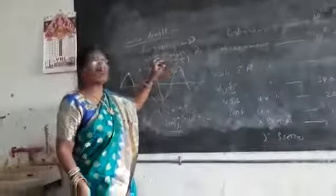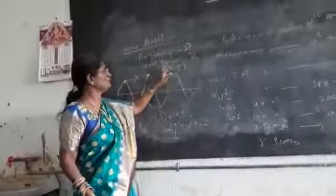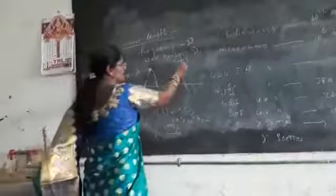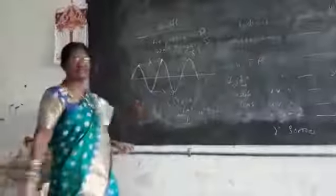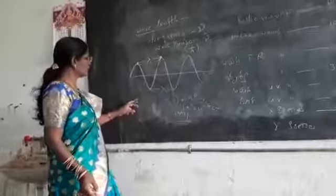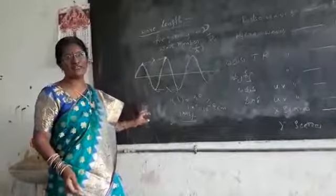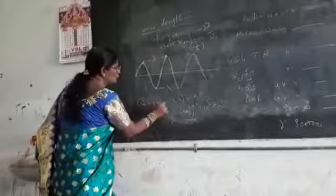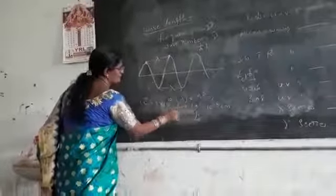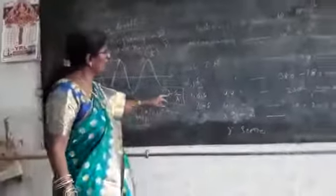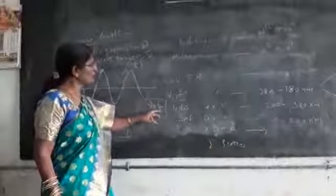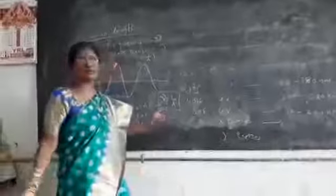The number of waves between 1 cm distance. Now, the relationship between these parameters: frequency equals c by lambda, where c is the speed of light. Nu equals c by lambda.